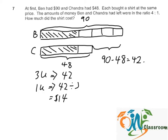So, how much did the shirt cost? We just need to take $48 minus 14. That will give us $34.